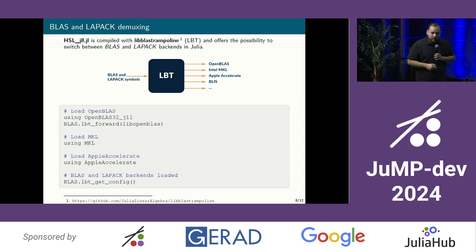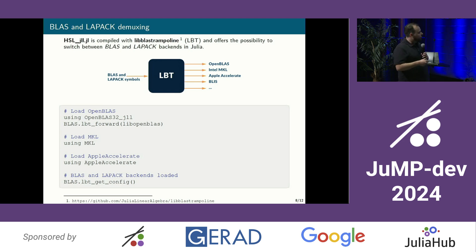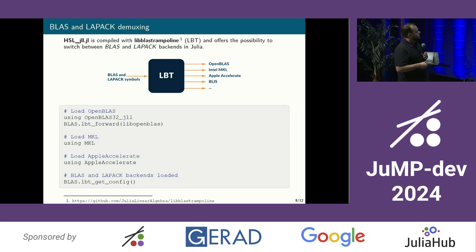The other thing we worked on a lot recently is to precompile IPopt in the Julia ecosystem, but also all dependencies — MUMPS, the other linear solvers, SPRAL, and also HSL — to rely on libblastrampoline. Libblastrampoline is just a way to easily switch the BLAS and LAPACK backend at runtime. Depending on your architecture, you can easily switch. By default, if nothing is loaded, IPopt_jll will automatically load a multithreaded version available for everyone, which is OpenBLAS.